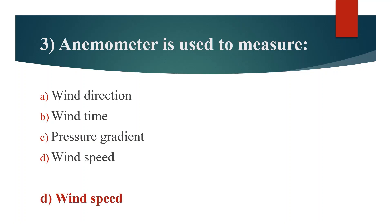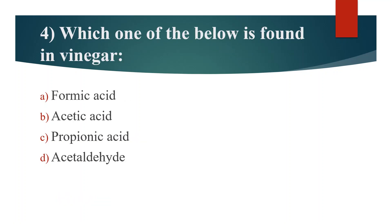Fourth question. Which one of the below is found in vinegar? Option A: Formic Acid. Option B: Acetic Acid. Option C: Propionic Acid. Option D: Acetaldehyde. Answer is Option B: Acetic Acid.